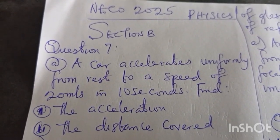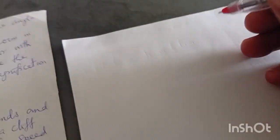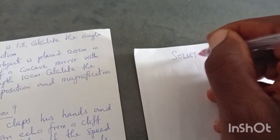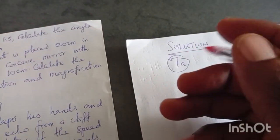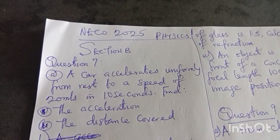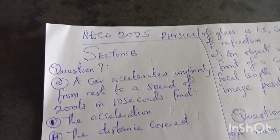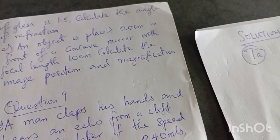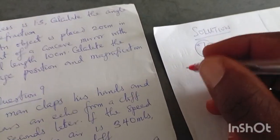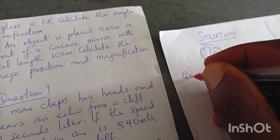A car accelerates uniformly from rest to a speed of 20 meters per second in 10 seconds. Find: (1) acceleration, (2) distance covered. My solution page is here — I'm ruling my paper and writing 'Solution.' Now, what are the parameters given? When solving physics questions, read your question carefully. The word 'rest' means something specific — put your answer in the comment box: whenever you hear 'rest,' what comes to your mind?